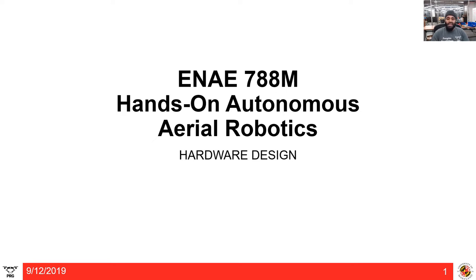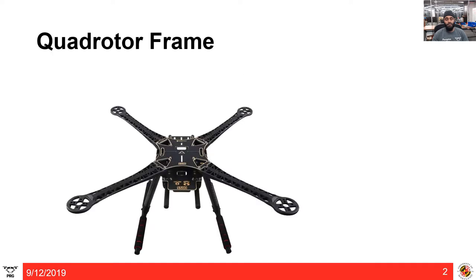Hi everyone, welcome back to ENAE 788M. In this class, let's learn how the quadrotors are designed before we fly them. A quadrotor frame is a rigid material that keeps all the electronic components intact — it's the main structure that binds all your electronics together. It is very essential to choose the right shape, size, and material of the frame.